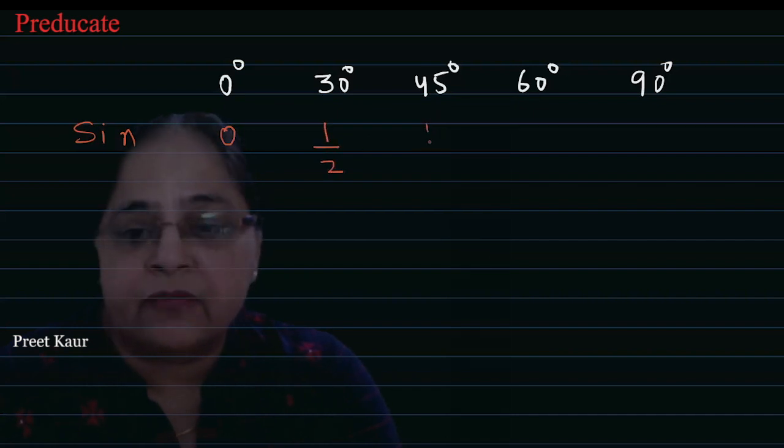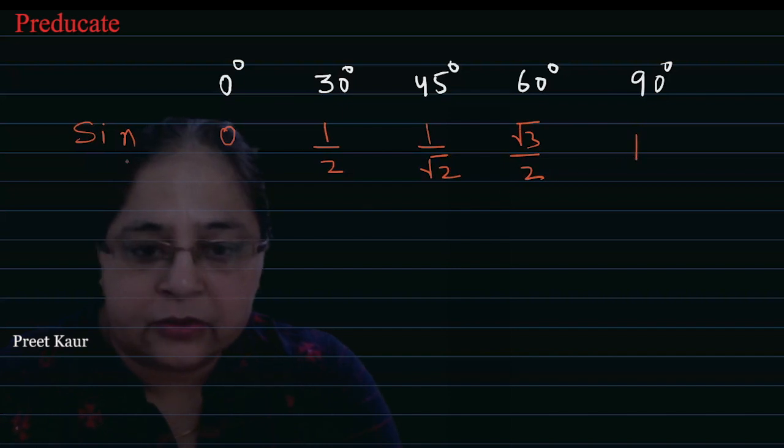Sine 45 is 1 upon root 2, and 60 is root 3 upon 2. Sine 90 is 1. So sine value, just as the angle increases, the value increases from 0 to 1.